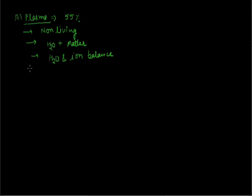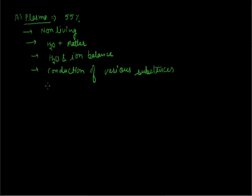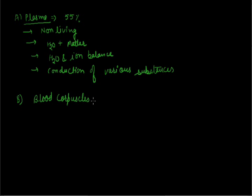Plasma is also helpful in the conduction of various substances like different kinds of digested food such as glucose, fatty acids, amino acids, etc. Along with this, it is also helpful in the transportation of hormones, vitamins, and various gases which can dissolve in blood plasma and be conducted everywhere in the body. The second component is blood corpuscle cells, which are of three kinds.